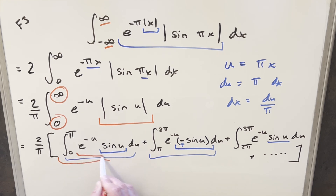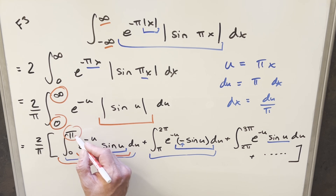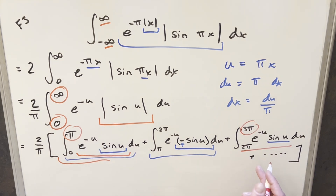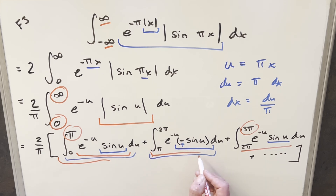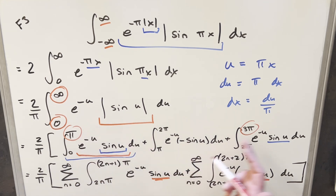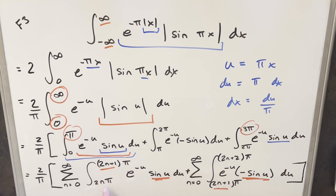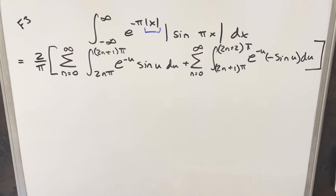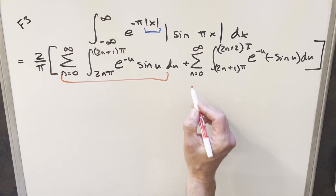Rather than listing everything out, I want to group terms. I'll group all the integrals where we just have positive sine u — where we have an odd multiple of π as a boundary, expressed as (2n+1)π — and separately group all the ones with negative sine u, where the bounds involve even multiples of π expressed as 2nπ and (2n+2)π. Using summation notation, I've now grouped all integrals with +sin u and all integrals with −sin u. Now I want to combine these two groups into a single expression.